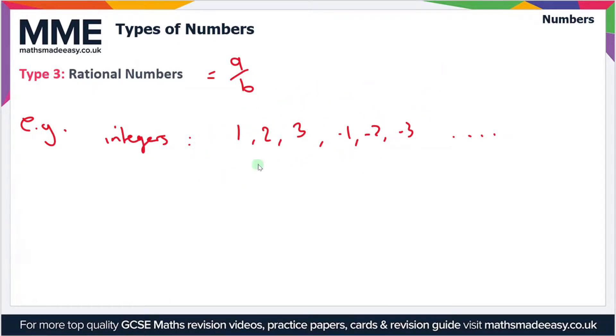We can write these as a fraction by just putting them over one. For instance, 1/1 equals 1, 2/1 equals 2, -1/1 equals -1, -3/1 equals -3, and so on.